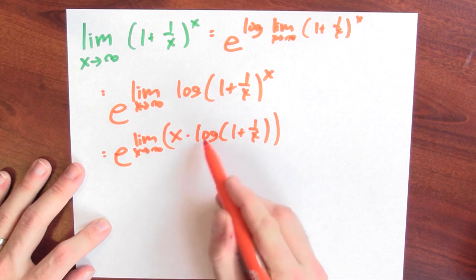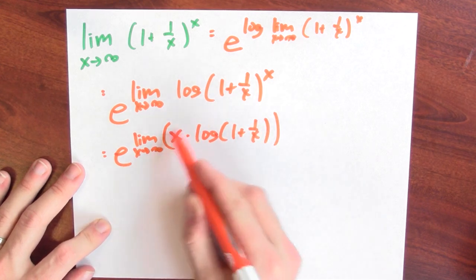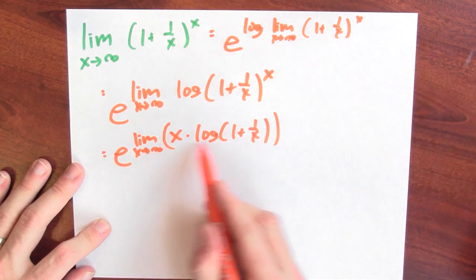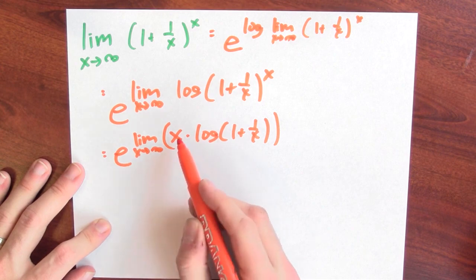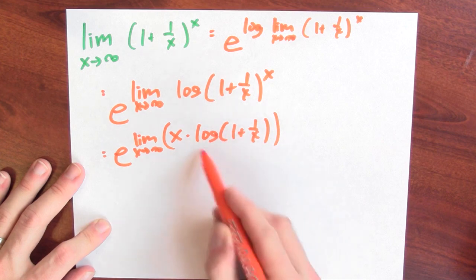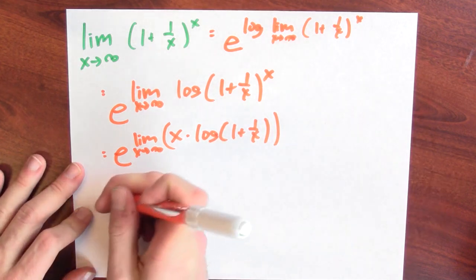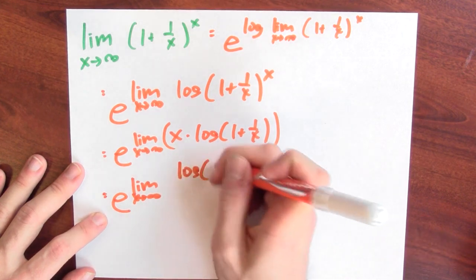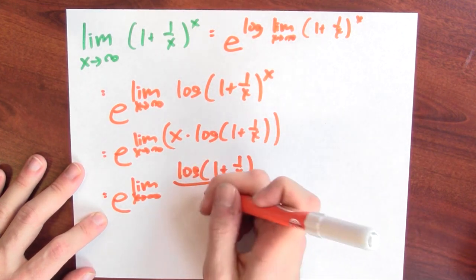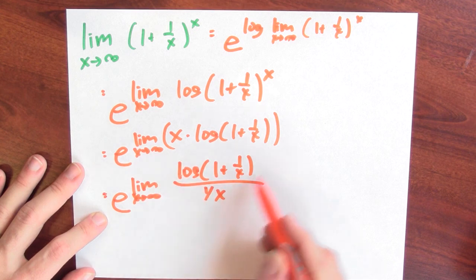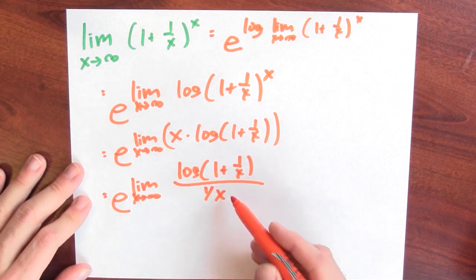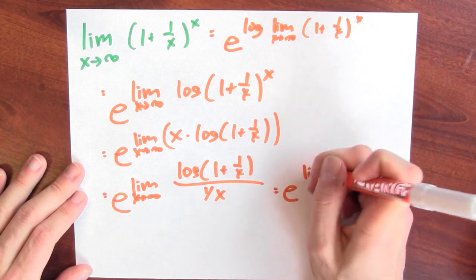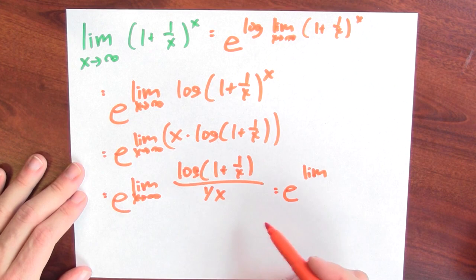Now x is very large, but log of a number close to 1 is close to 0. This is a big number times a number close to 0 — the infinity times 0 indeterminate form. To handle this, I put the infinity in the denominator using reciprocals to make this 0 over 0 — the sort of thing L'Hôpital can handle. So this is e to the limit as x approaches infinity of log(1 + 1/x) divided by 1/x, which is 0 over 0.